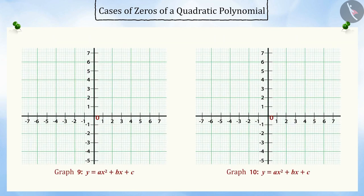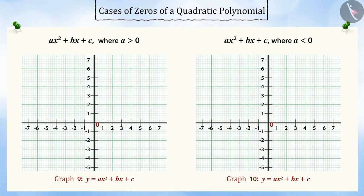Can you tell in which case the graph of a quadratic polynomial will open upwards or downwards? If a is greater than zero in the quadratic polynomial ax² + bx + c, then the parabola will open upwards.